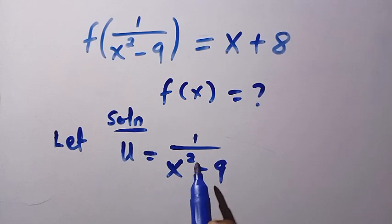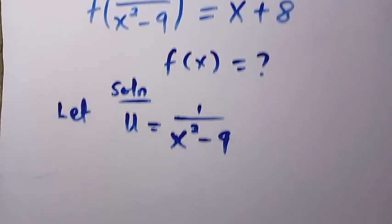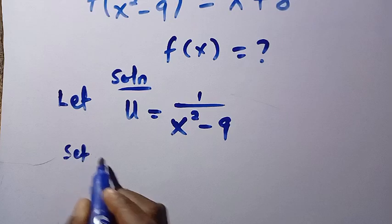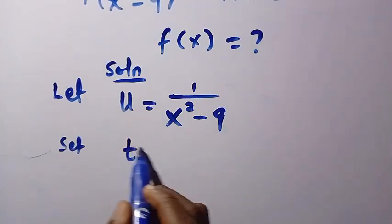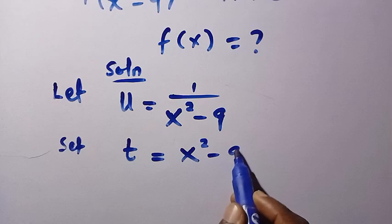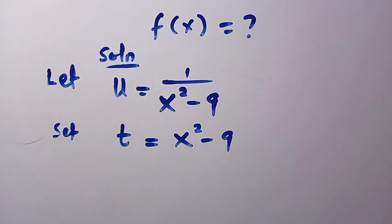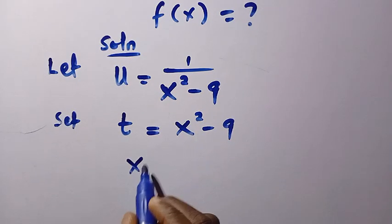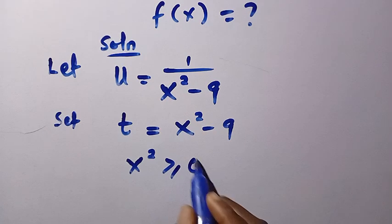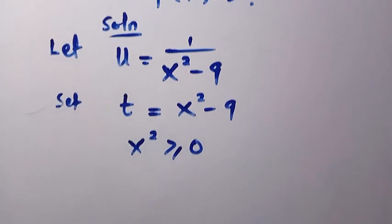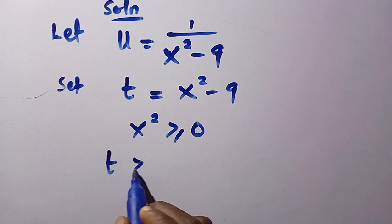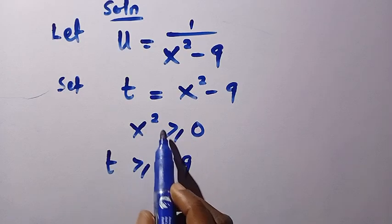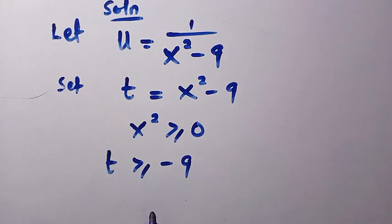I want to define the domain first. To obtain the domain, we have 1 divided by x squared minus 9. Suppose I set x squared minus 9 to be t. Then t equals x squared minus 9. For every x, x squared is greater than or equal to 0, so t is also greater than or equal to minus 9.